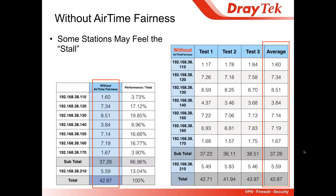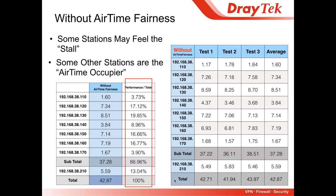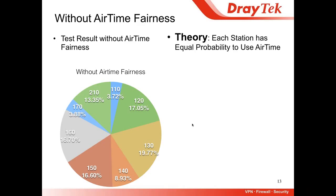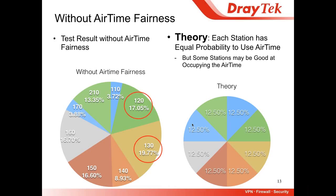Based on the average, we made another chart showing the performance ratio compared to total performance. Some stations are good at occupying the airtime — we can call them the airtime occupiers. For example, station 130 uses almost 20% of the total performance. We can draw this pie chart without airtime fairness and compare it to the theory. Stations 120 and 130 use too much of the airtime, while stations 110 and 170 barely got the airtime compared to the theoretical partition they should receive.